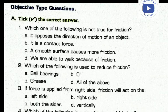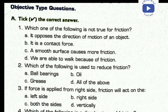Which one of the following is not true for friction? Option one: it opposes the motion of an object. Option two: it is a contact force. Option three: a smooth surface causes more friction. Option four: we are able to walk because of friction. The correct option is C — smooth surface causes more friction — this is not true.